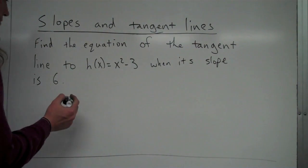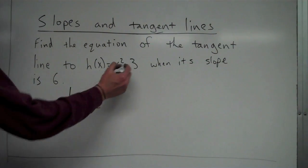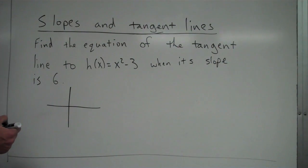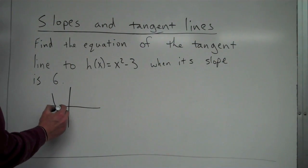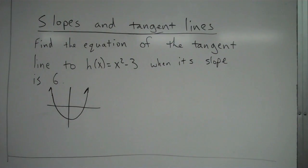So let's just make sure we're clear with what's going on here. So we have this graph right here, h(x) = x² - 3. So it looks kind of like this. It's just an upward-facing parabola shifted down 3 units.